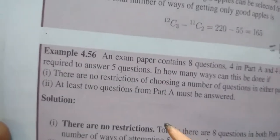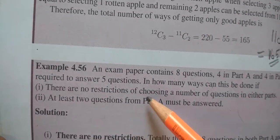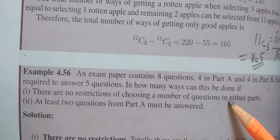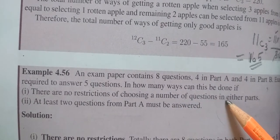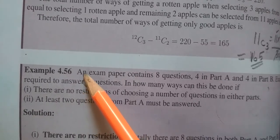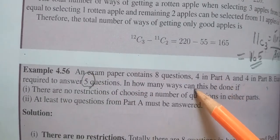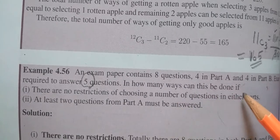Here are 2 conditions. First, there are no restrictions on choosing a number of questions in either part. You have to answer 5 questions from Part A and Part B. So this is very easy.